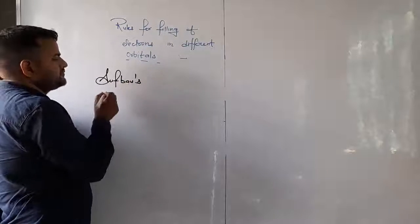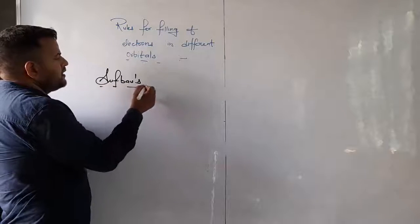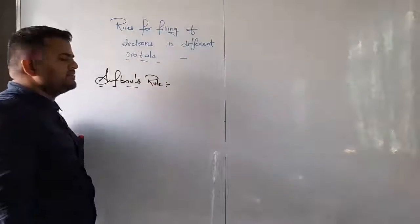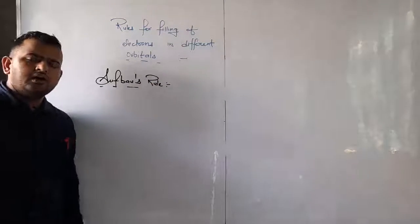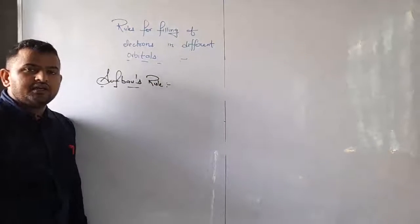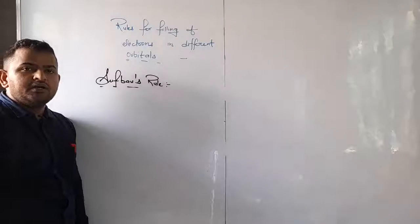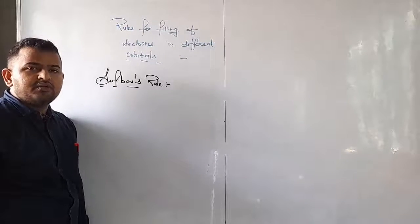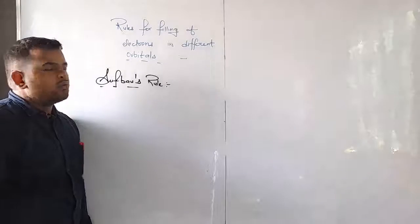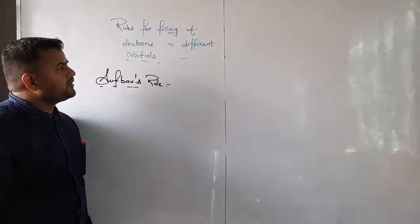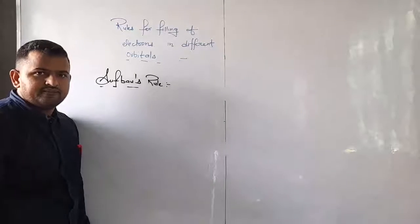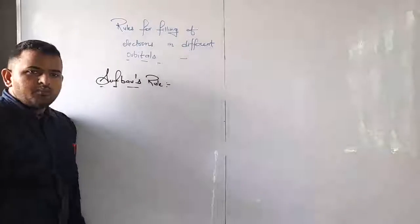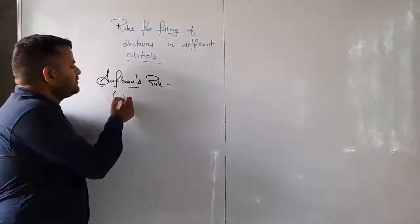This rule tells us about which particular energy level or which particular sub-shell or orbital the electron is filled in. This is called the Aufbau principle — 'building up'. It means that the lower energy orbital is filled first.